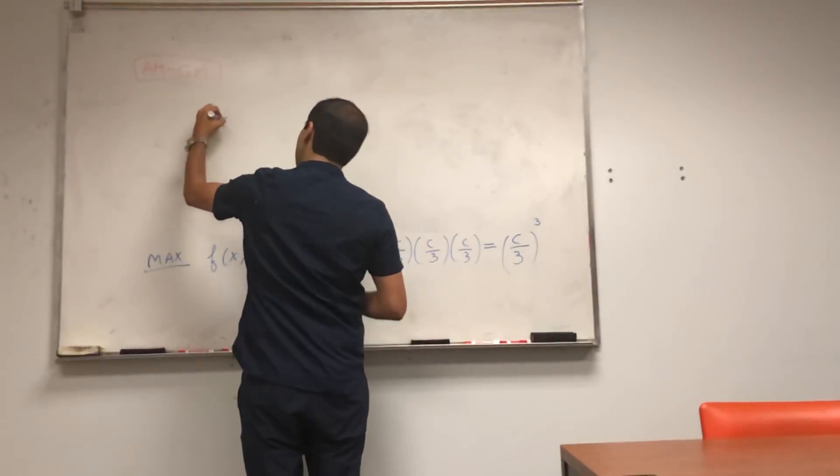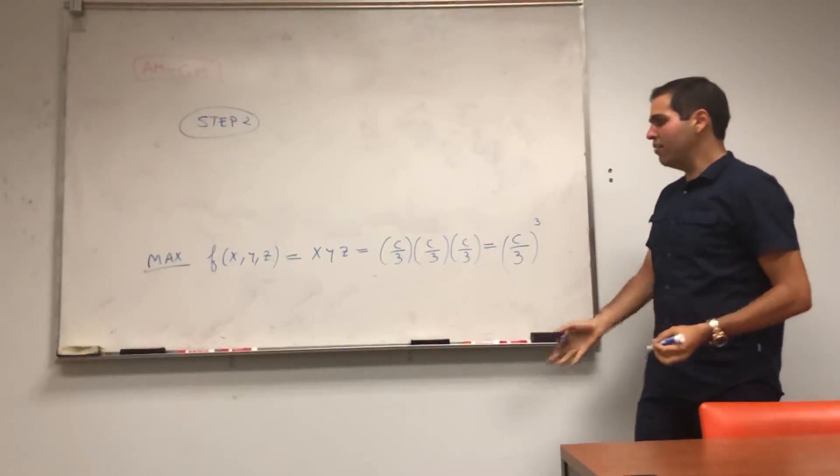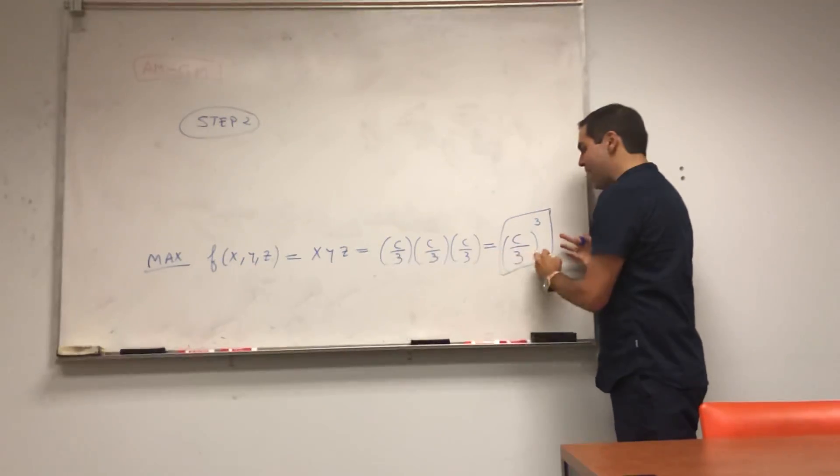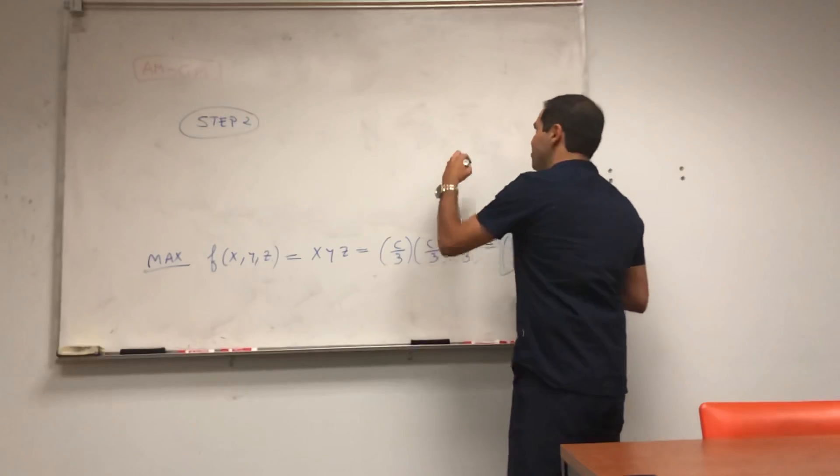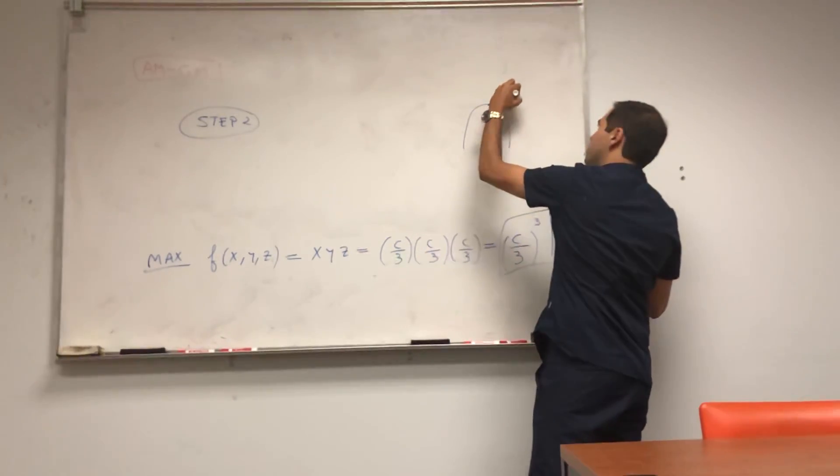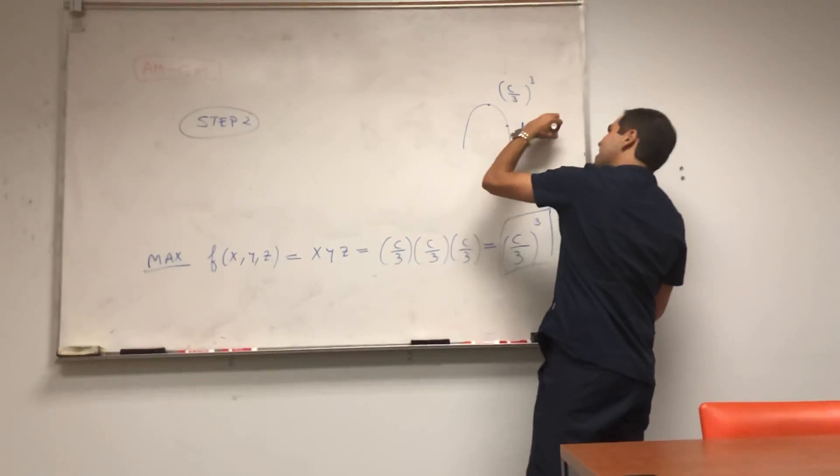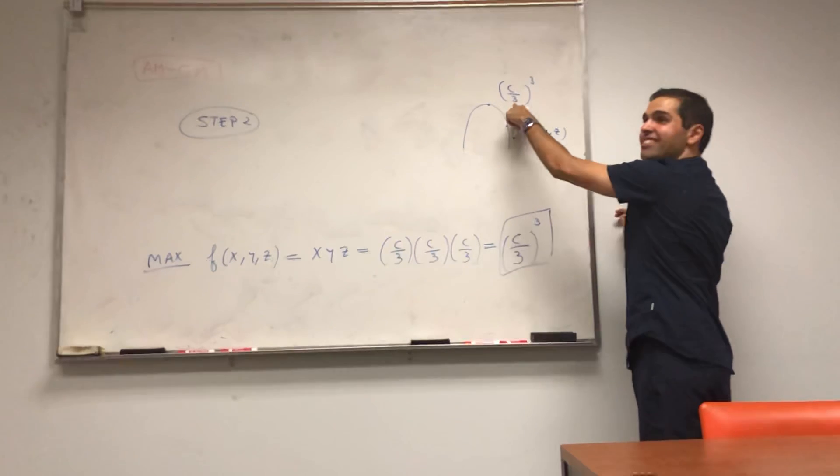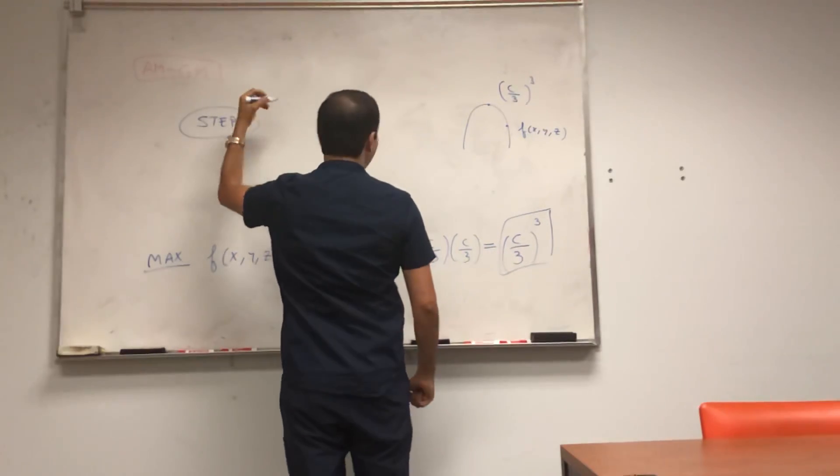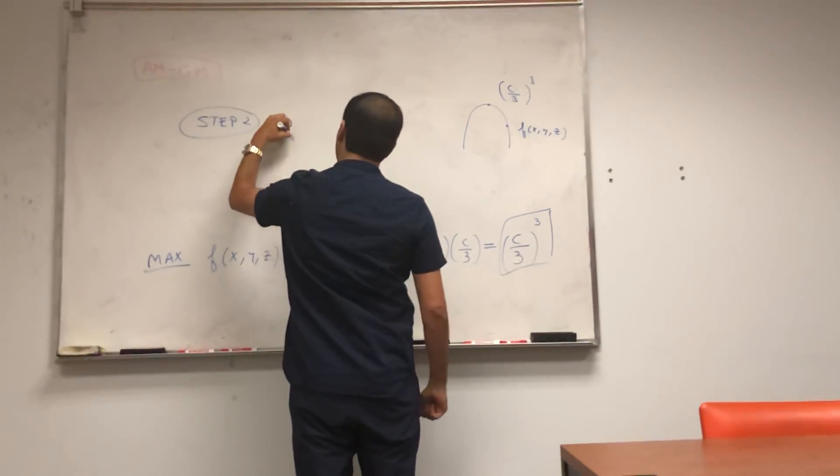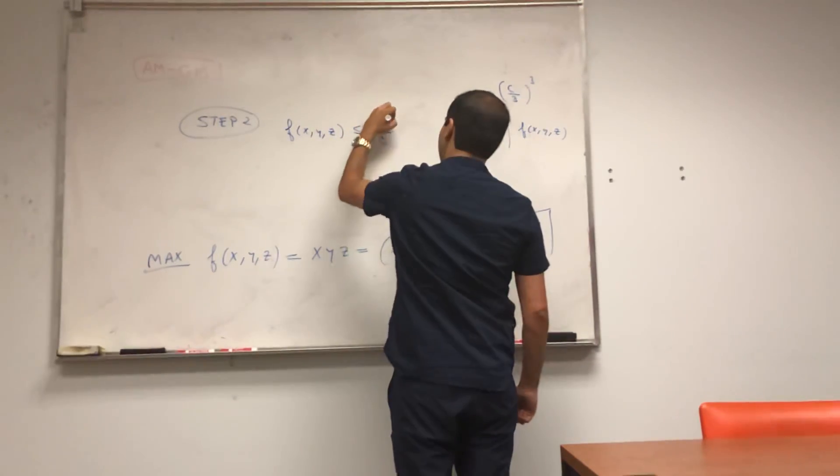So step two. Okay, what do we have? We have, again, that this is the maximum value of f. But by definition of the maximum value, again, suppose this is c over 3 cubed. And this is, I guess, f of x, y, z. Because this is the biggest value, any other value of f must be beneath it. So by definition of a maximum, we have f of x, y, z is less than or equal to c over 3 cubed.